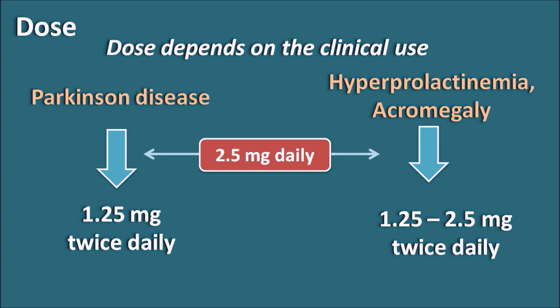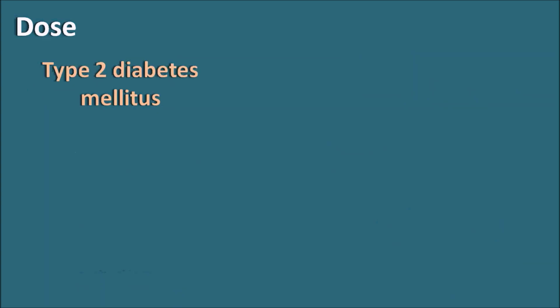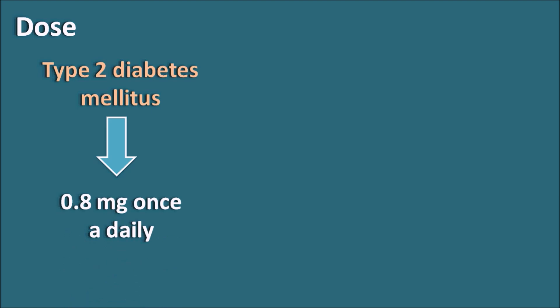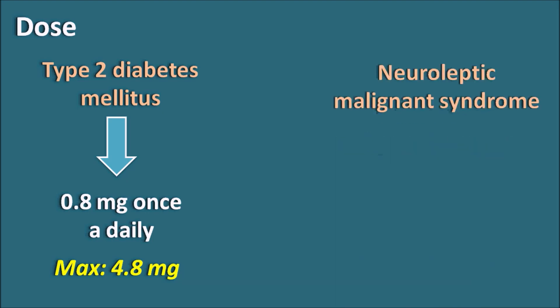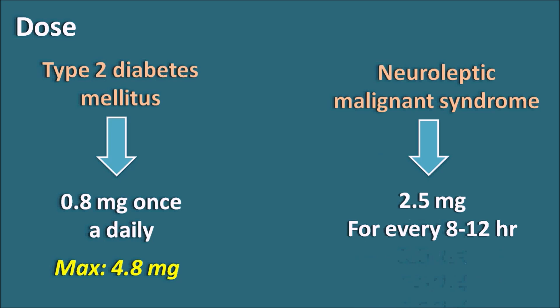In type 2 diabetes mellitus, the dose is initially started at 0.8 mg once daily and can be increased in increments of 0.8 to 1.6 mg, so that the maximum dose achievable is 4.8 mg — notably a lower starting dose than for other indications. In Neuroleptic Malignant Syndrome, the drug can be given around 2.5 mg every 8 to 12 hours to control motor disturbances.